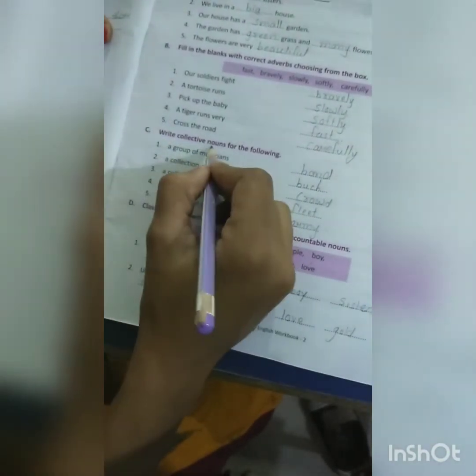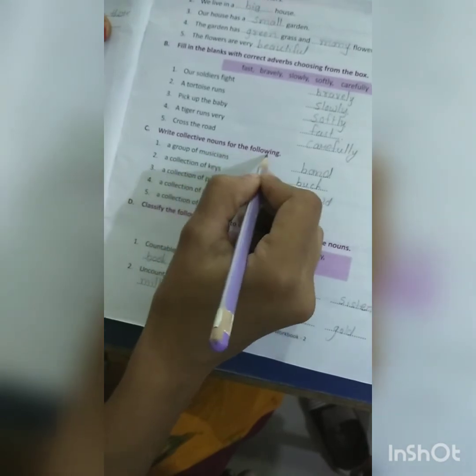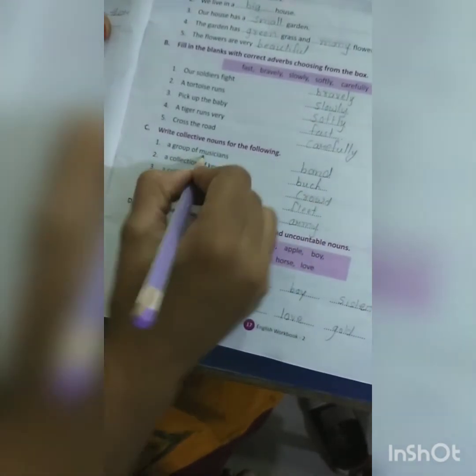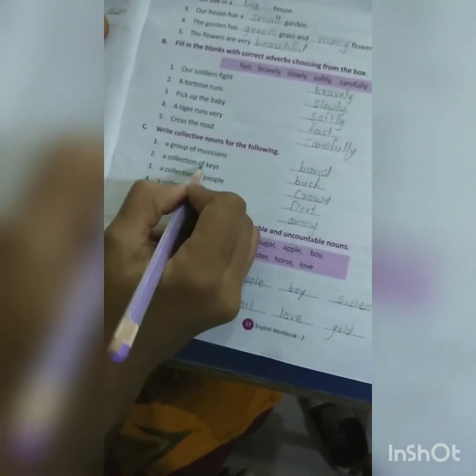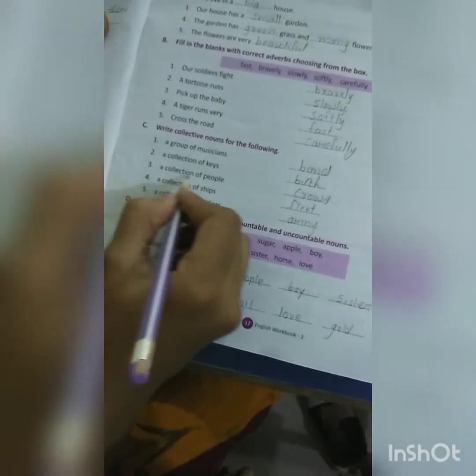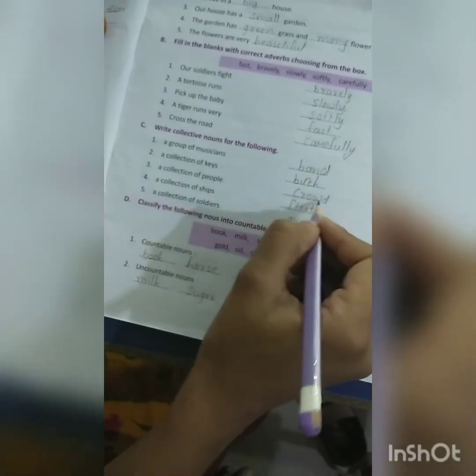Exercise number C: Write collective nouns for the following. A group of musicians - band, a collection of keys - bunch, a collection of people - crowd, a collection of ships - fleet, a collection of soldiers - army.